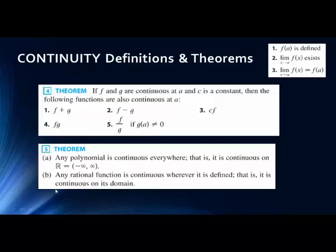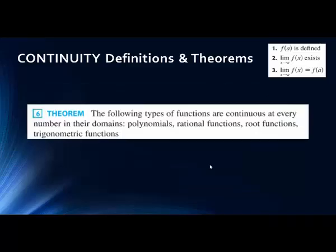Theorem 5 says that a polynomial is continuous everywhere — continuous over all values of x. Rational functions are continuous everywhere they're defined, meaning everywhere except where the denominator equals zero. This also lists more functions that are continuous in their domains: polynomials, rationals, roots, trig functions, and so on. Polynomials are continuous for all numbers; rationals everywhere except where the denominator is zero; even root functions are continuous for non-negative numbers.